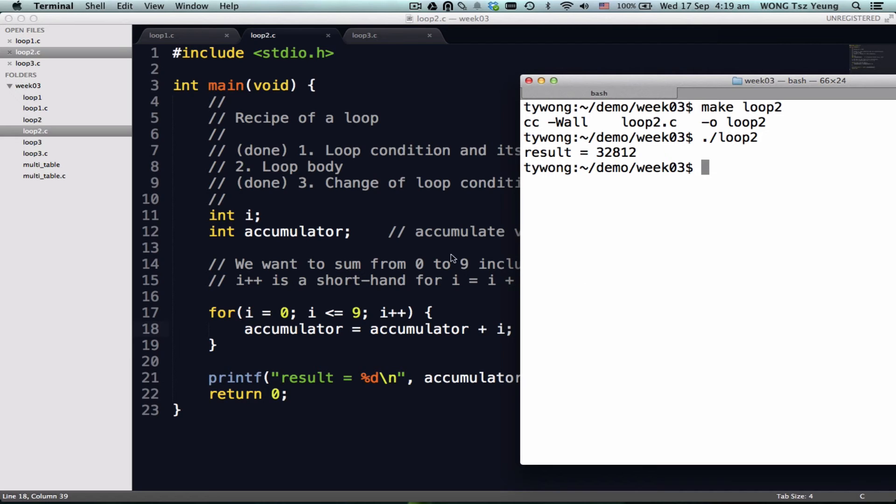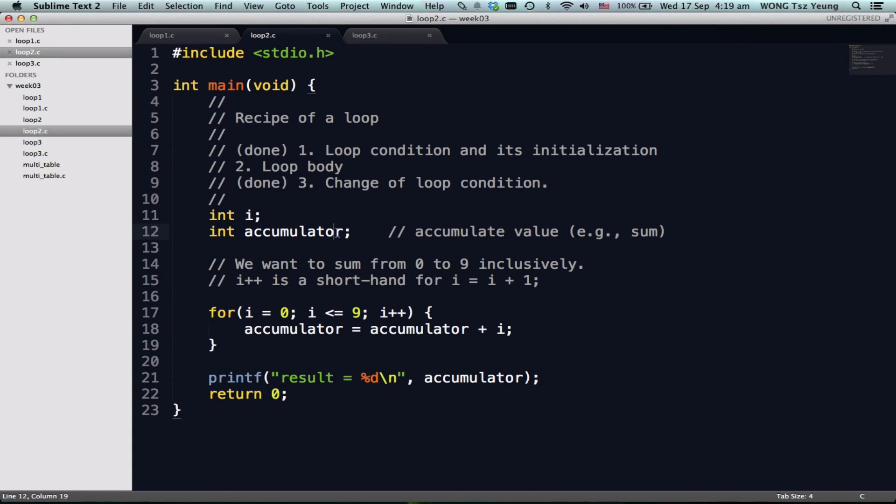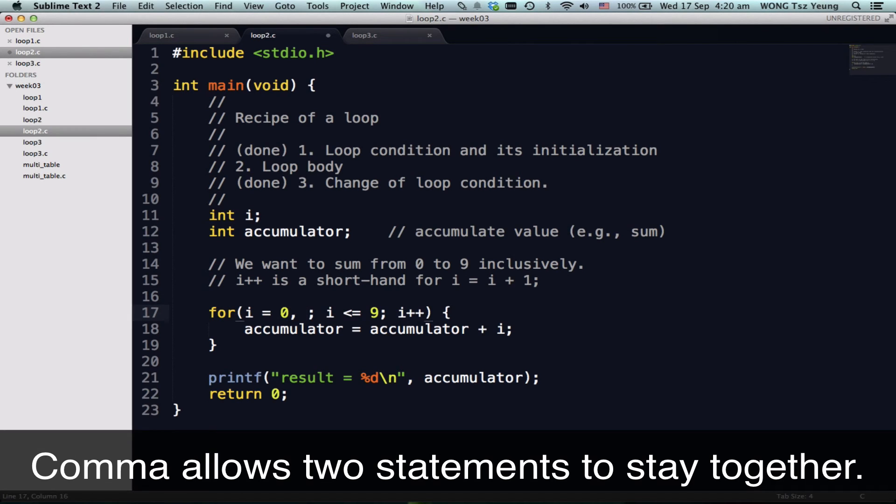Okay, the bug is basically, again, remember, the initialization is not for i only. We have to initialize the accumulator. When you want to initialize two things together, actually we can put this statement into the for loop. Wow, it's cool, right?